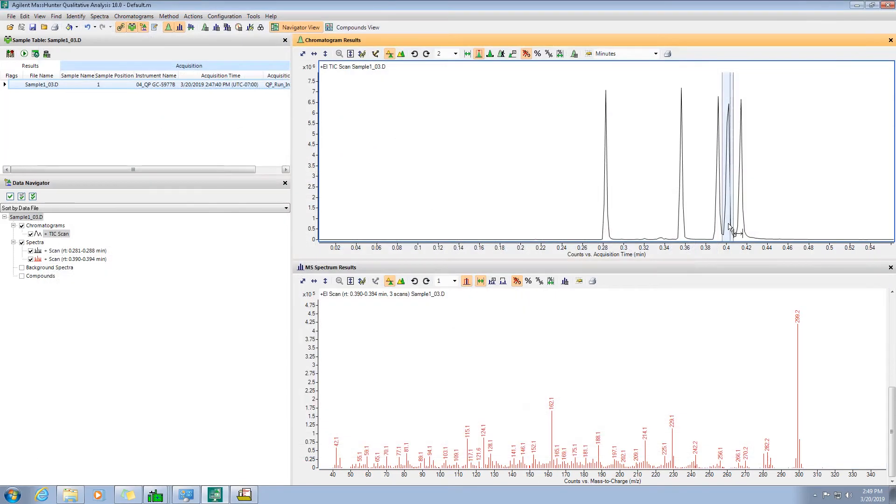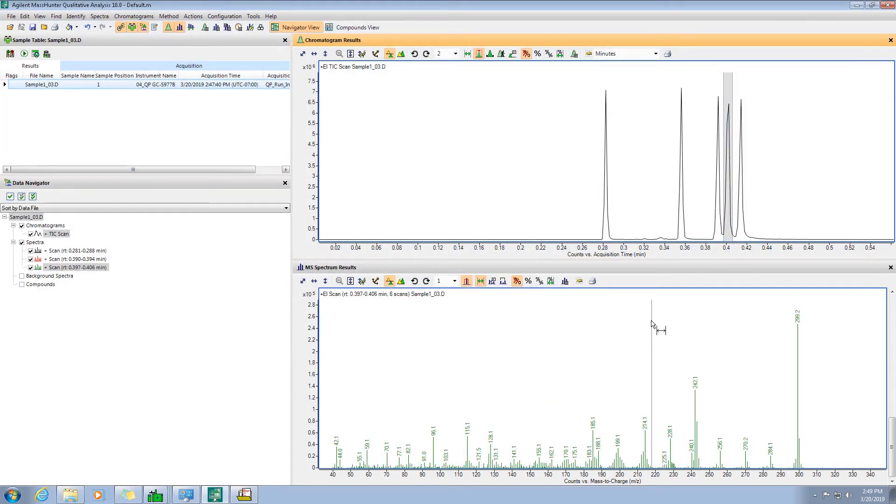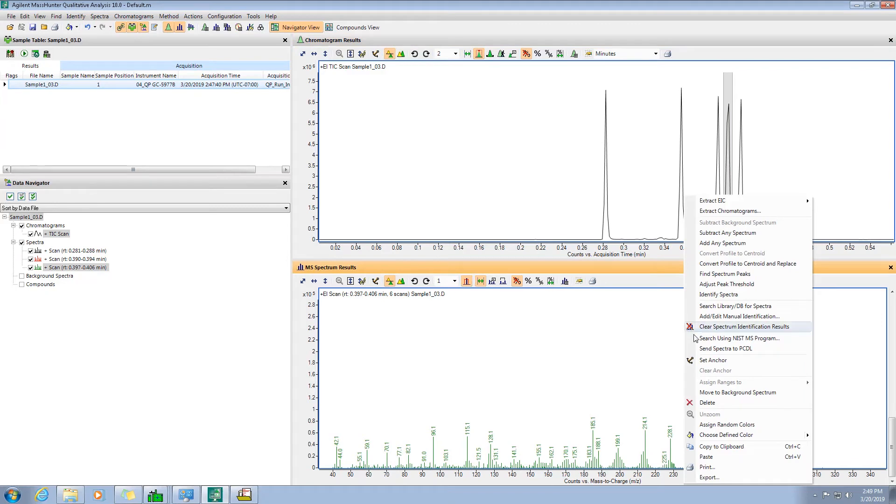The advantage of the separation within the QuickProbe column is that it helps resolve compounds in a mixture and prevents ion source contamination.